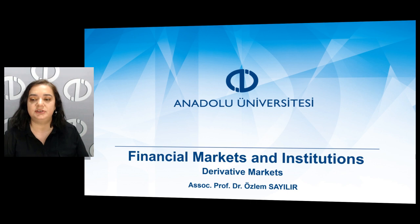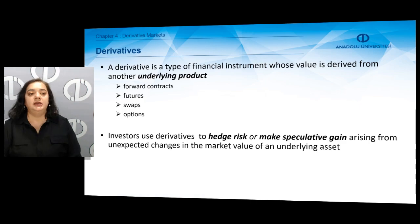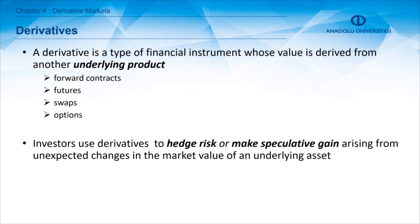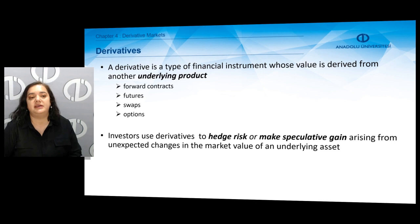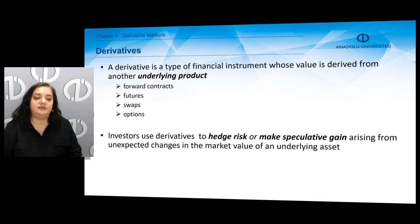We have reviewed the first three chapters of financial markets and institutions. Now we're going to go over derivative markets, the fourth chapter. A derivative is a type of financial instrument whose value is derived from another underlying asset. Those underlying assets could be foreign contracts, and derivatives can be classified as forward contracts, futures, swaps, or options. The underlying products could be any asset — foreign currency, foreign exchange, a stock, or a commodity.